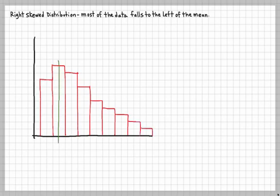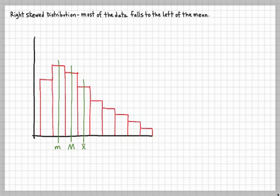Let's draw a vertical line at the highest point — this is going to be the mode, which will be small m. The next one to the right of it is going to be the median, capital M. And the next one over will be the sample mean. So for a right skewed distribution, you have the mode at the highest point, the median in the middle between the mode and the sample mean, and then the mean.